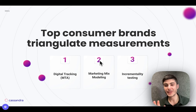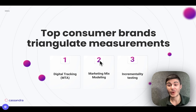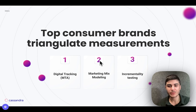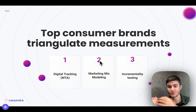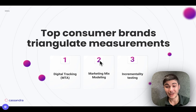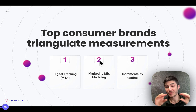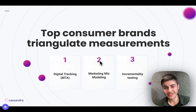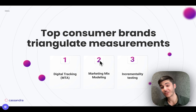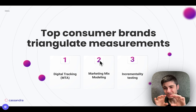To solve this, we start talking about triangulation in marketing measurement. Triangulating measurements means using three different techniques to scientifically measure marketing performance. The first pillar is digital tracking. Digital tracking is extremely useful specifically for bottom-funnel campaigns. We can't track users through their entire customer journey, but we can track the user right before they buy, and digital tracking is excellent at optimizing and measuring bottom-of-the-funnel campaigns in real time.